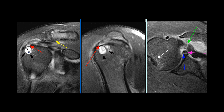Supraspinous tendinosis is seen with a partial articular surface tear. There is delamination of the articular surface of the distal supraspinous tendon. A footprint erosion or cystic change in the adjacent greater tuberosity of the humerus.